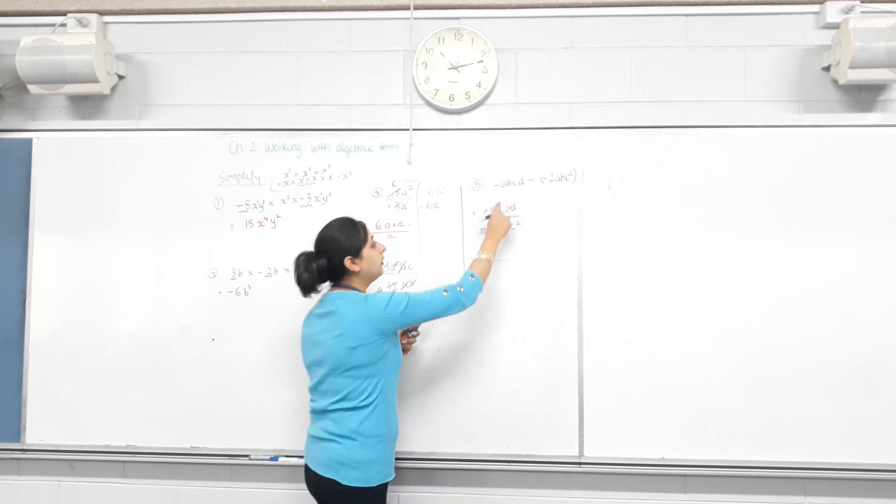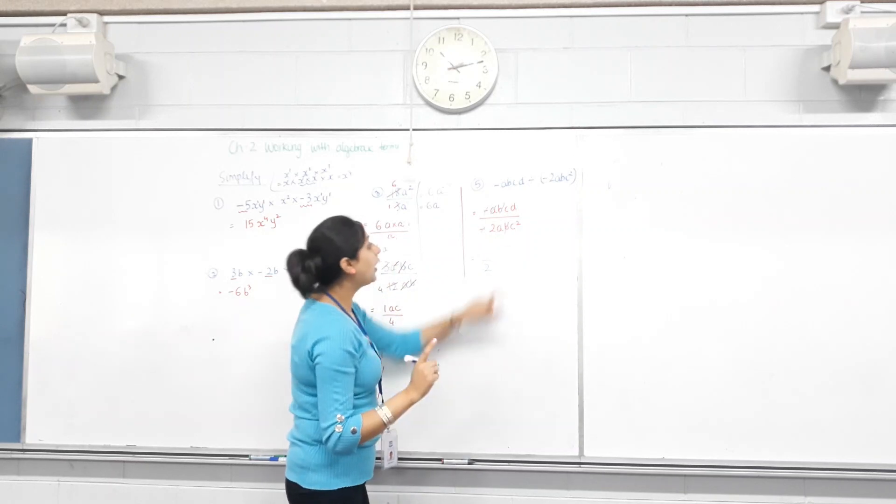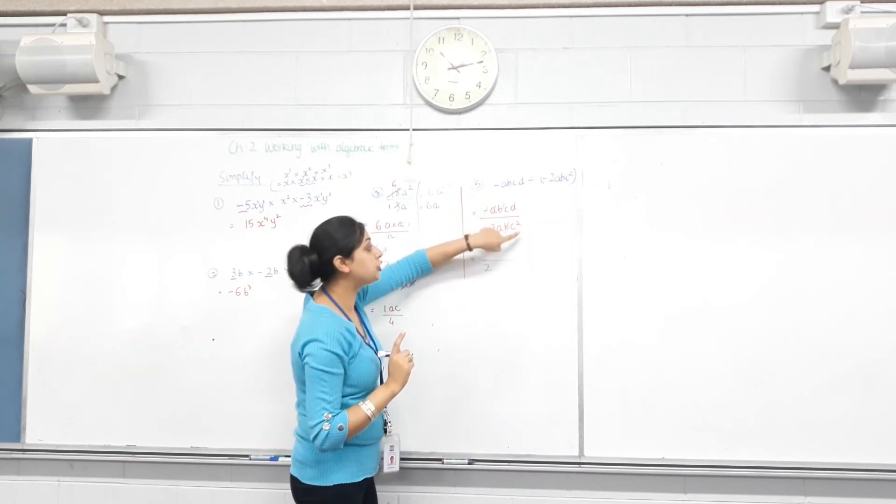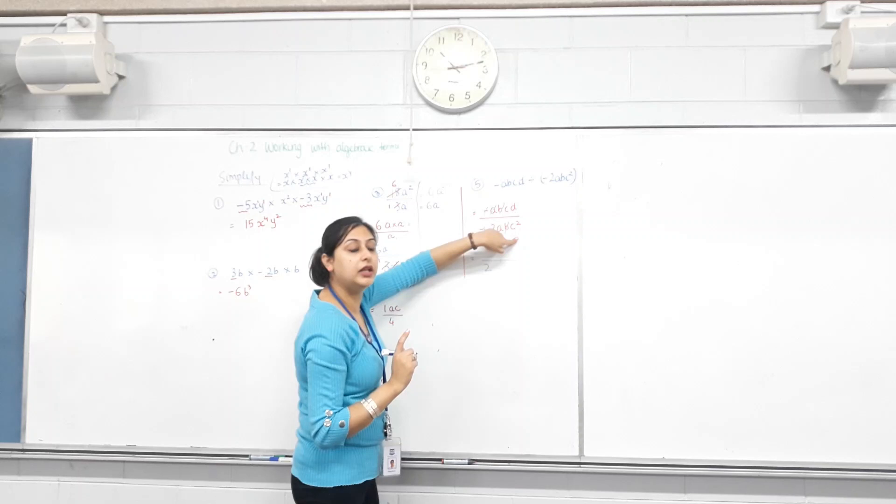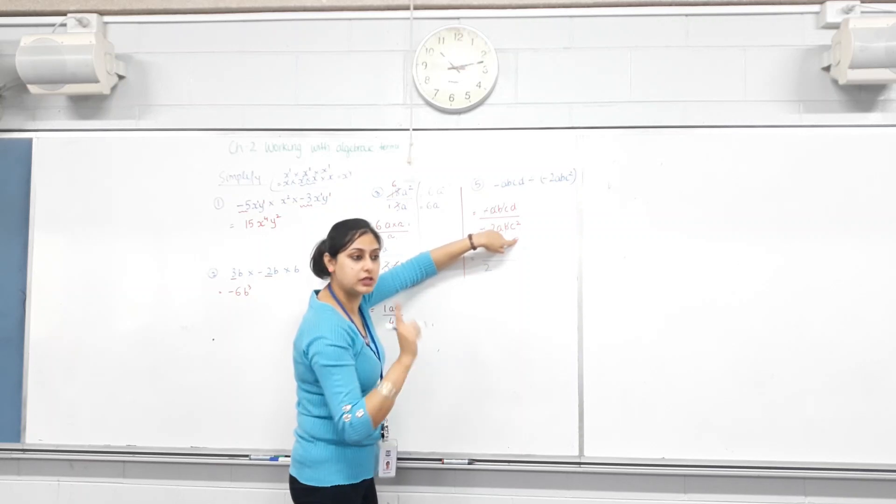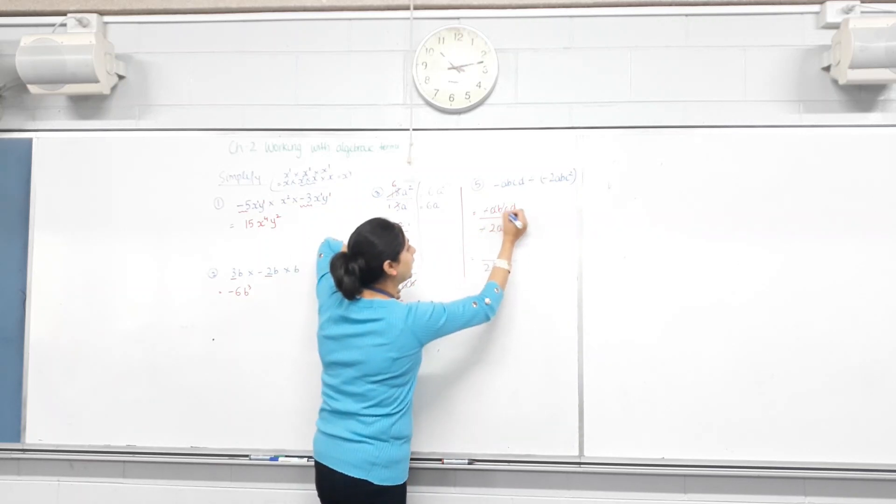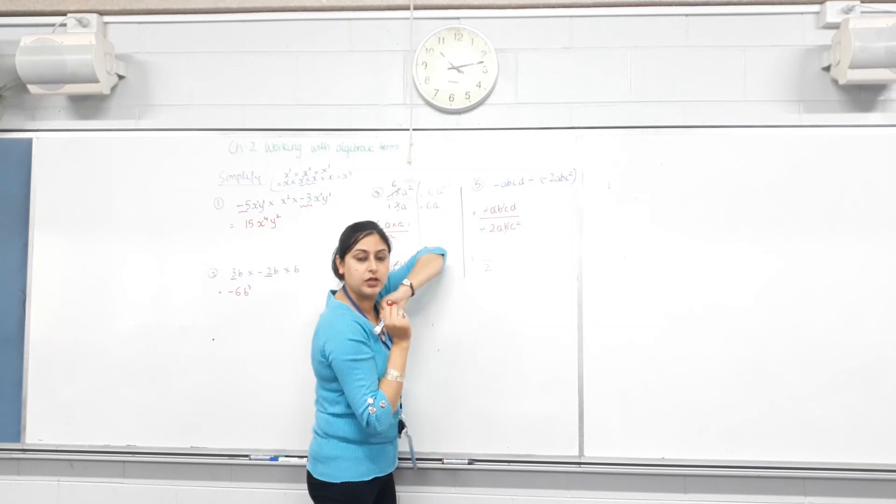How many B's? One. B? One. Can they get cancelled? Yes. Now, you have 1 C in the numerator, but 2 in the denominator. How many can you cancel? What's the minimum number of C's? One. So, can you cancel this 1 C with 1 here? Yes.